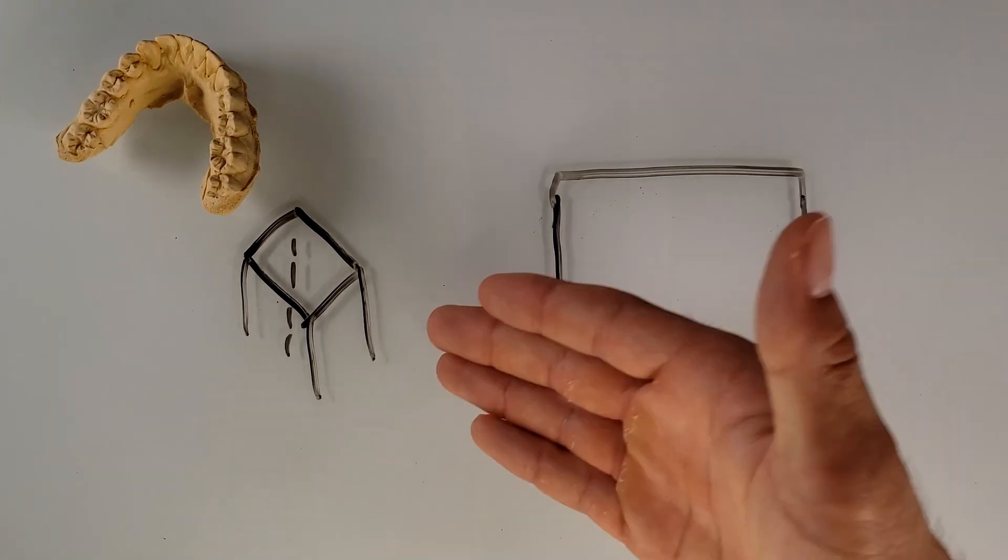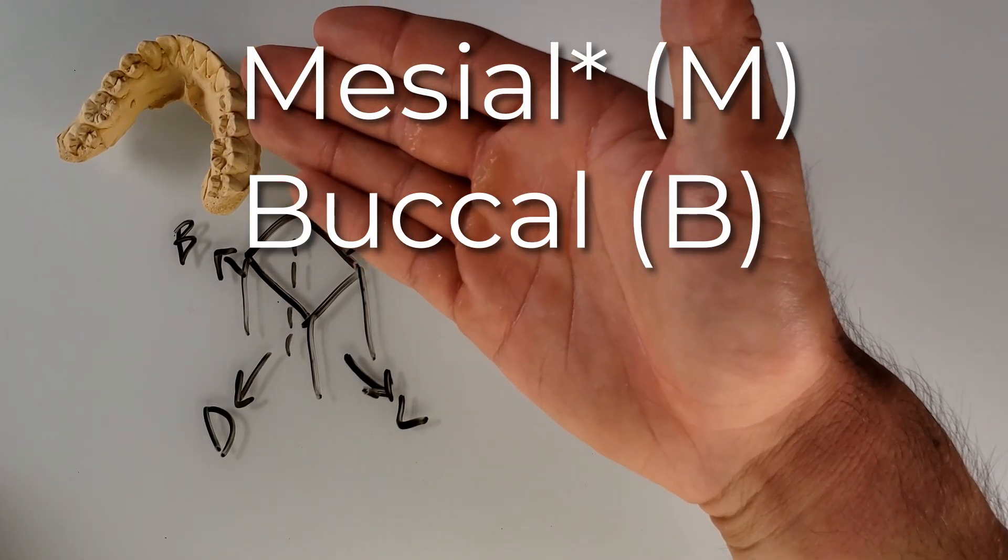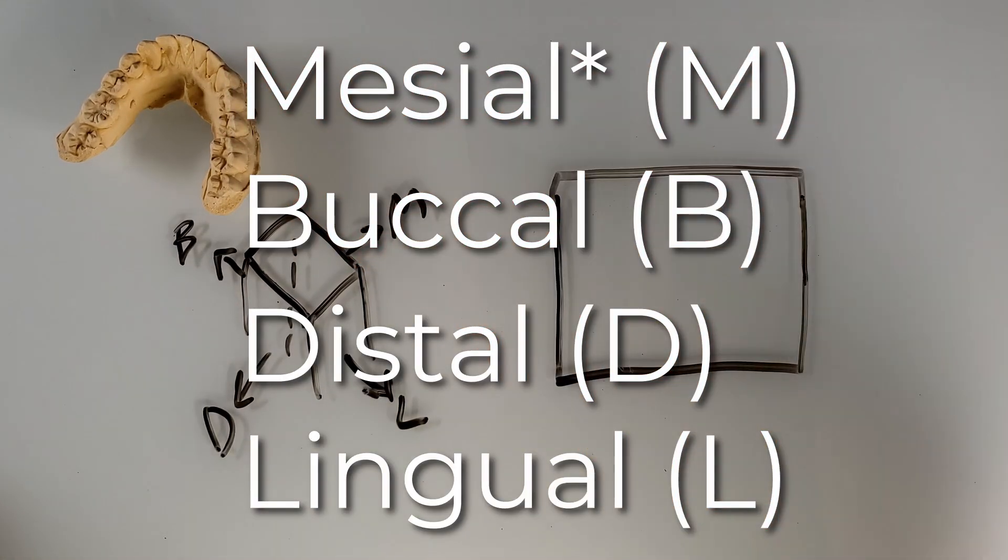Let's draw the directional terms. So we got our labial, buccal, distal, lingual, all labeled on the tooth.